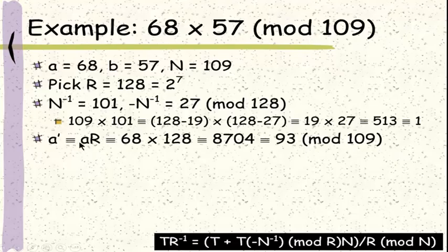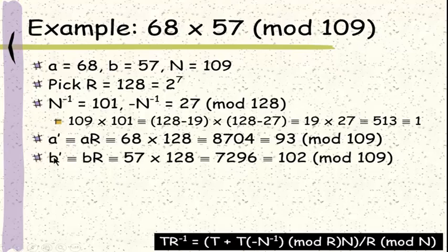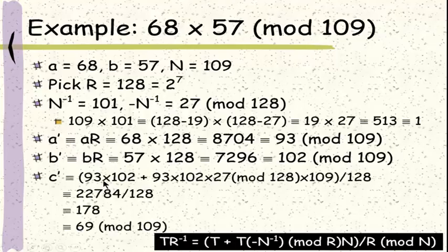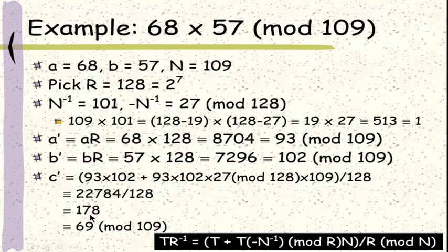Now we compute a prime, which is the modular multiplication between a and r — in this case 68 times 128 mod 109, which is 93. Similarly, b prime is 57 times 128 mod 109, which is 102. Next, we compute using the Montgomery reduction formula for a prime times b prime. So t equals a prime times b prime, plus t times negative n inverse (which is 27) mod 128, times n (which is 109), divided by r (which is 128). Simplifying this, the result is 178. However, this is greater than n which is 109, so we subtract 109, giving the result 69.